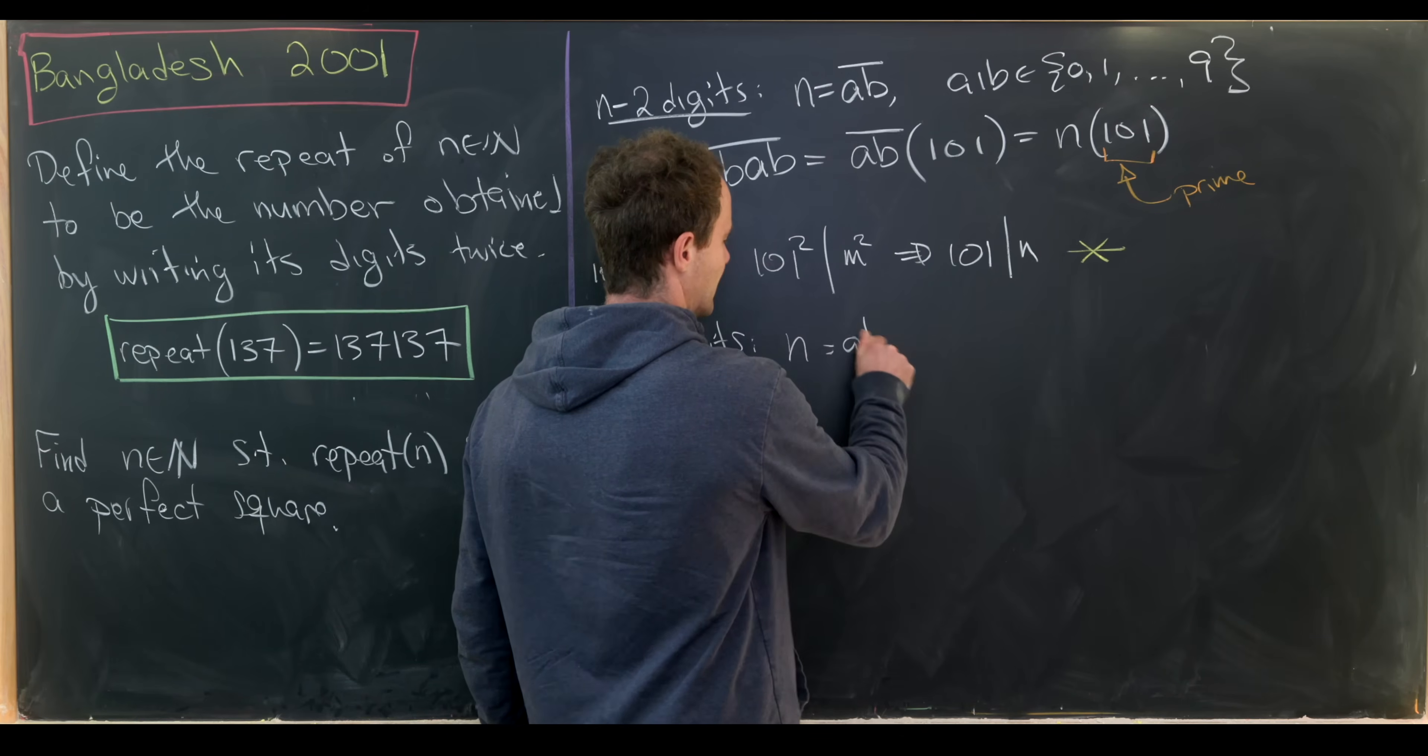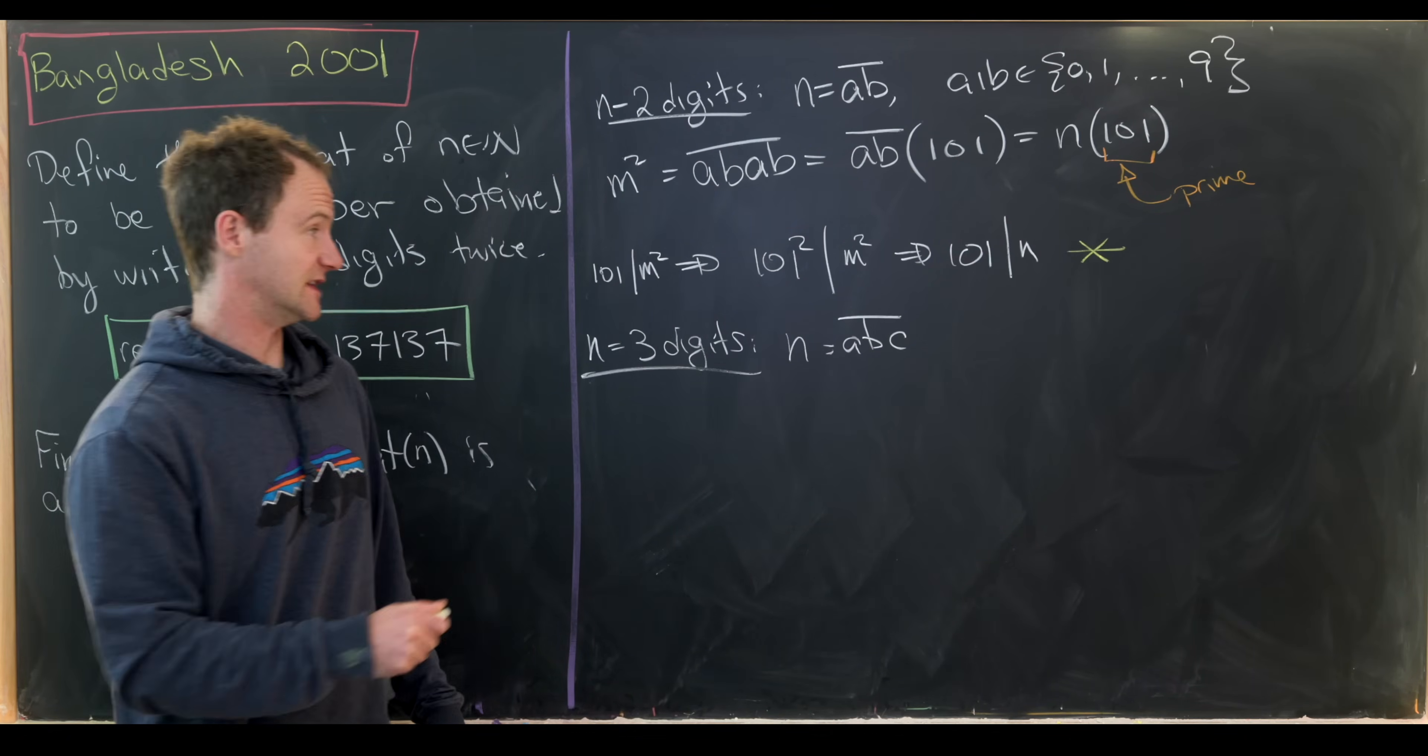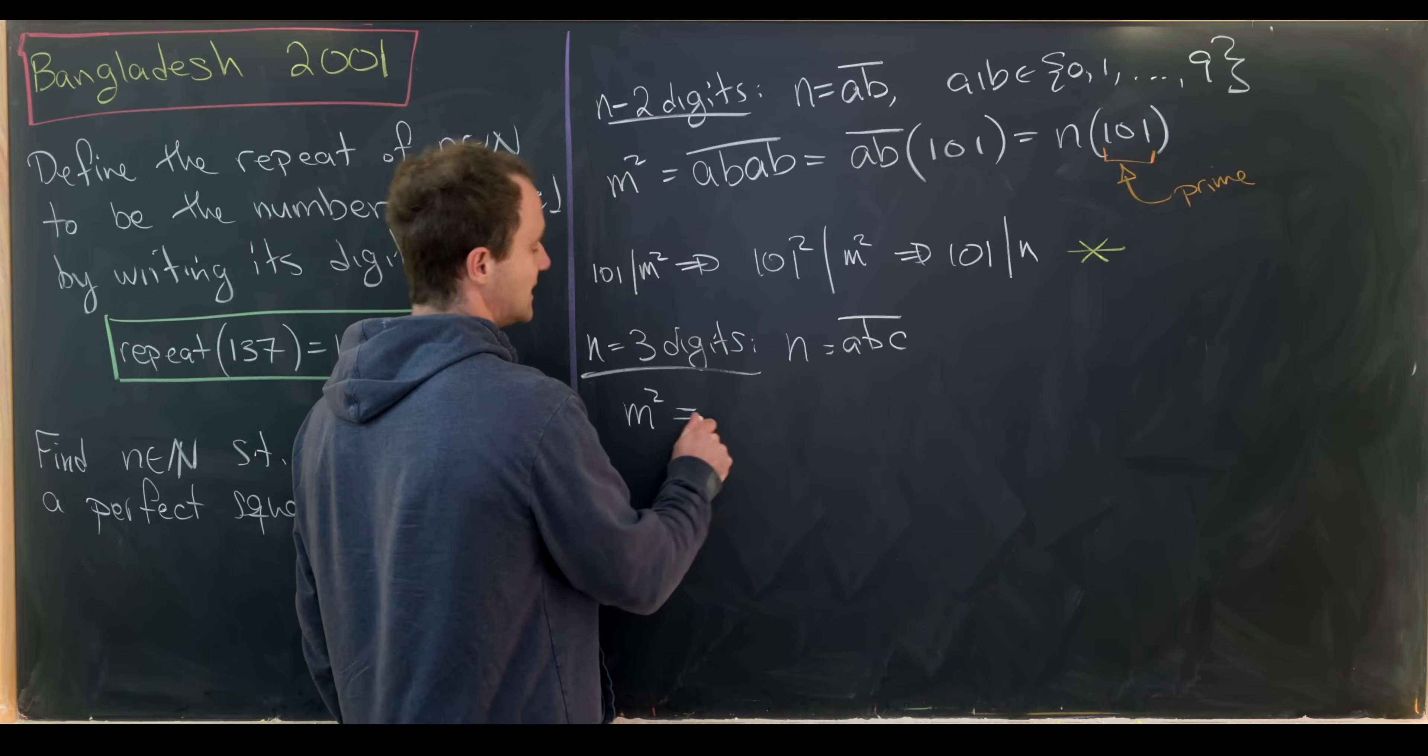So let's look next at the case when n has three digits and see if anything goes on there before looking at the general case. So here we would have n is made up of a, b, c. I'll put a line over it so that's the digits.